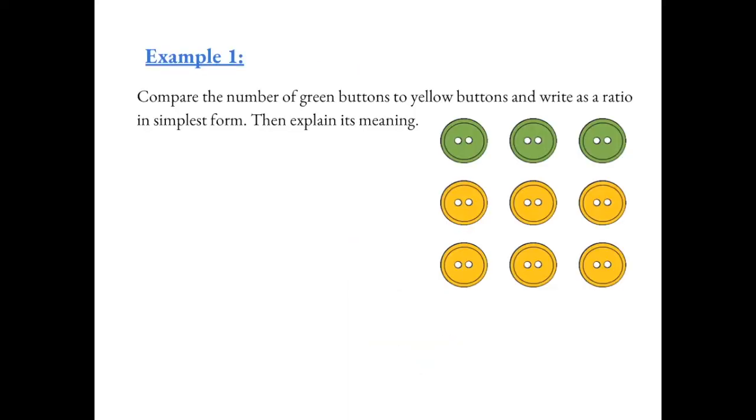Example 1, compare the number of green buttons to yellow buttons and write as a ratio in simplest form. So there are three green buttons and six yellow buttons. So we could write this as 3 to 6, 3 over 6, or 3 to 6.